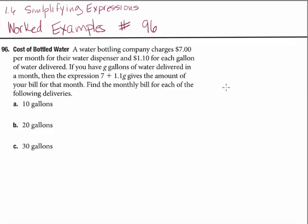Notice that this is a monthly charge and that the entire question is going to be based on a one-month bill. The $7 charge occurs every month regardless of how much water is delivered. The $1.10 is charged for each gallon. One household may have the dispenser and 10 gallons delivered, while another household may choose to have 20 gallons delivered, but they're still charged for the dispenser.